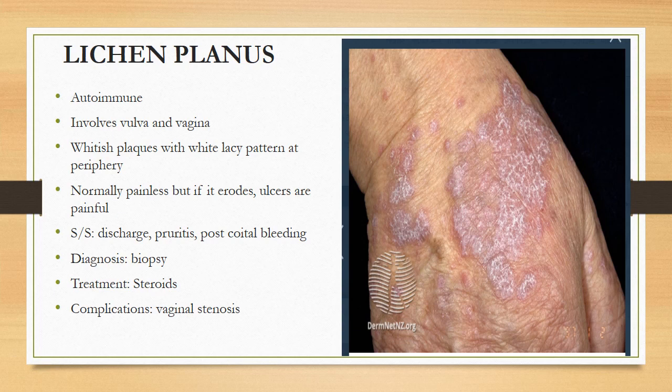Next, lichen planus. These are autoimmune lesions present on many parts of the body, mainly the mouth. They can also be present on mucosal lesions on the genitals and on the flexor surfaces. They appear as whitish plaques with a white lacy pattern at the periphery. Because these are whitish plaques, we always need to rule out psoriasis in these cases.